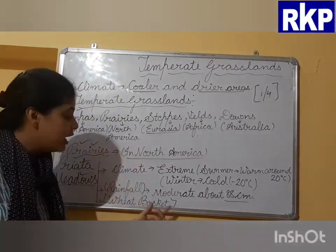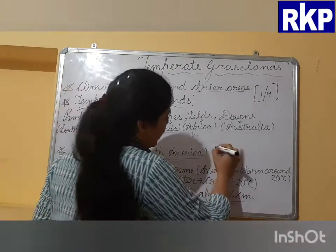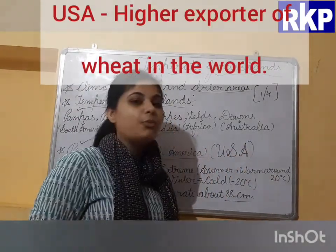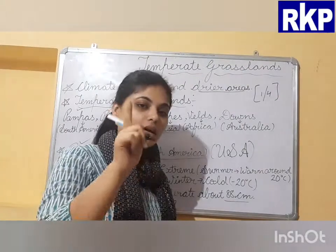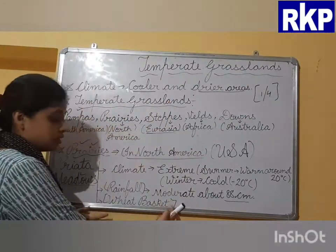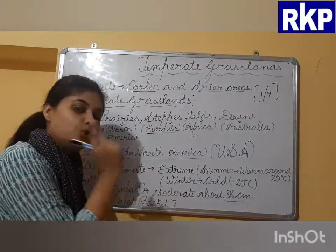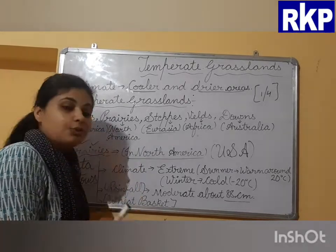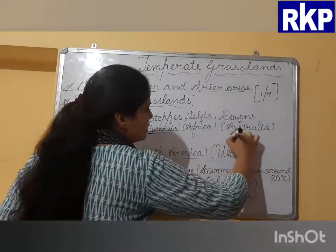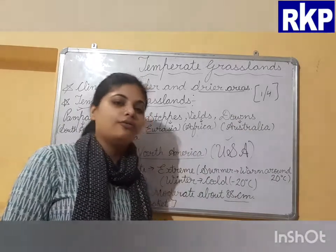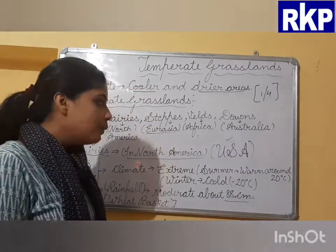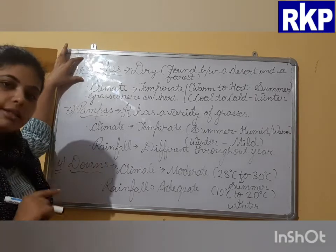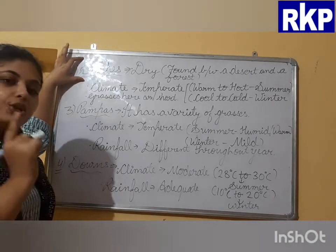The USA is the largest exporter of wheat in the world, and that is because maximum wheat is produced in the Prairies region. That is why the USA holds this distinction. Next we move to Steppes, found in Eurasia.